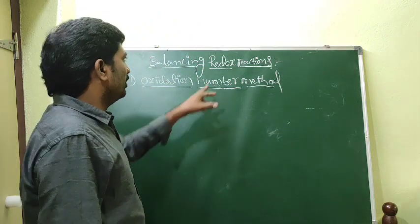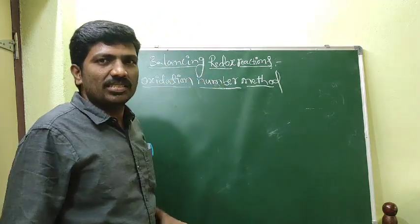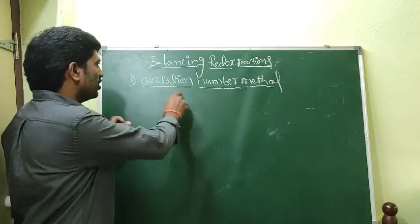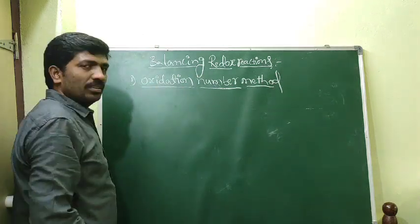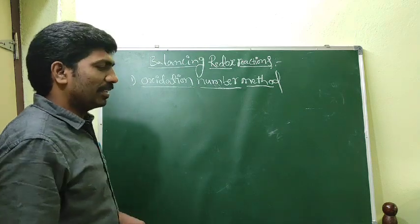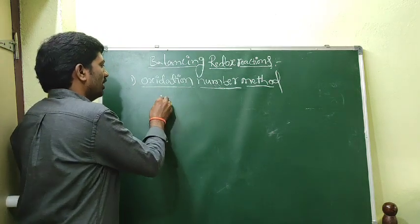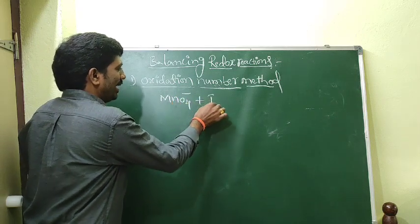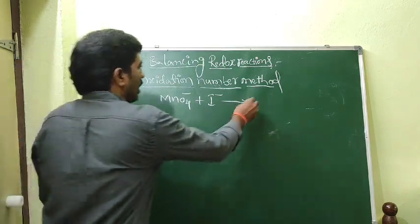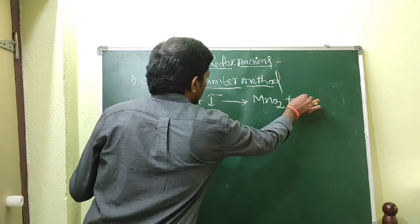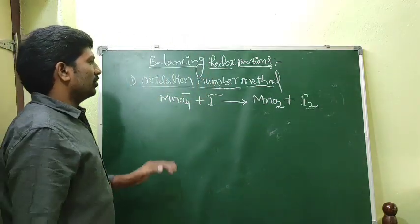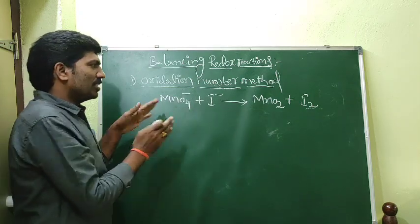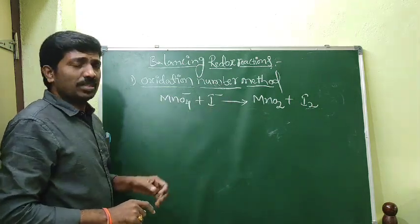Balancing redox reactions — we should balance with two methods. The first one is the oxidation number method. To demonstrate, I will take one example: MnO4⁻ plus I⁻ gives MnO2 plus I2. This is the unbalanced redox reaction. We should balance it with the help of oxidation numbers. First, we should write all the oxidation numbers.